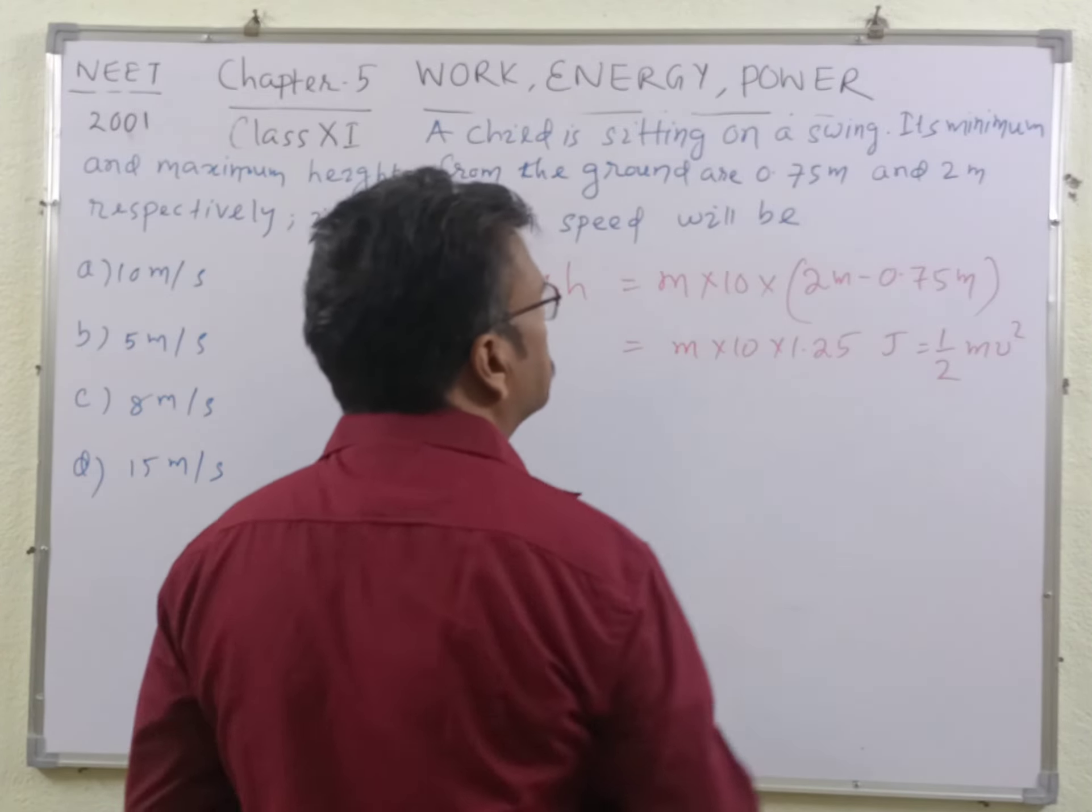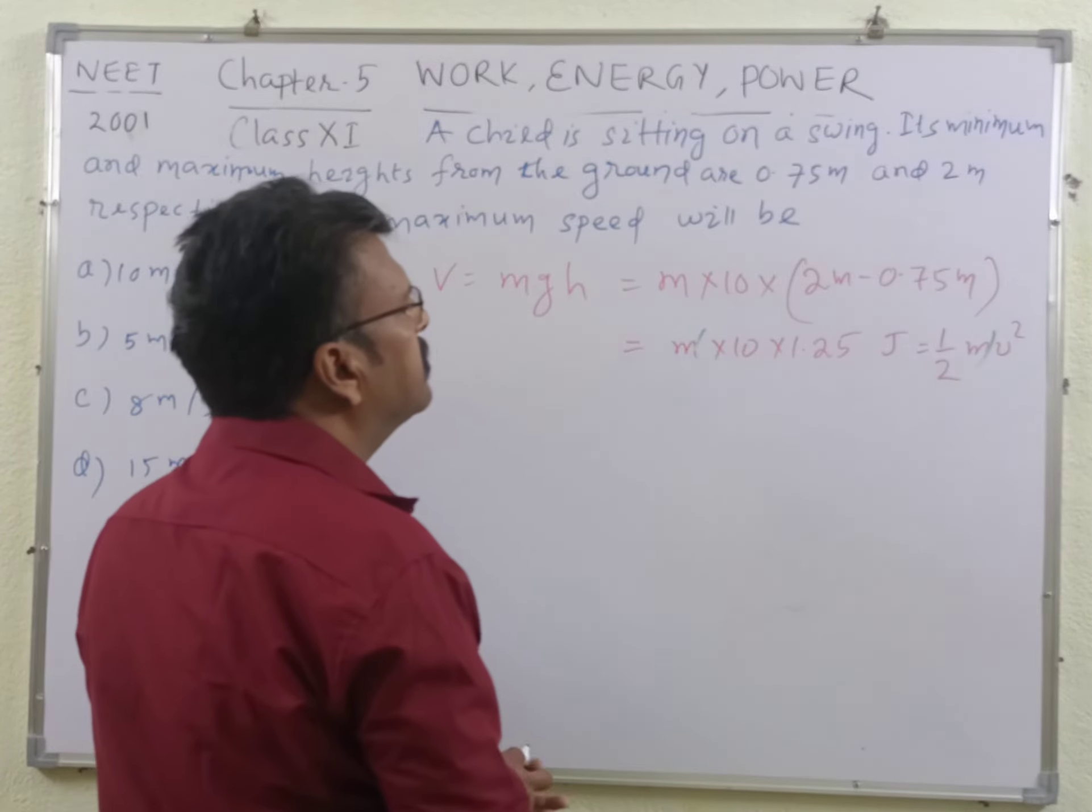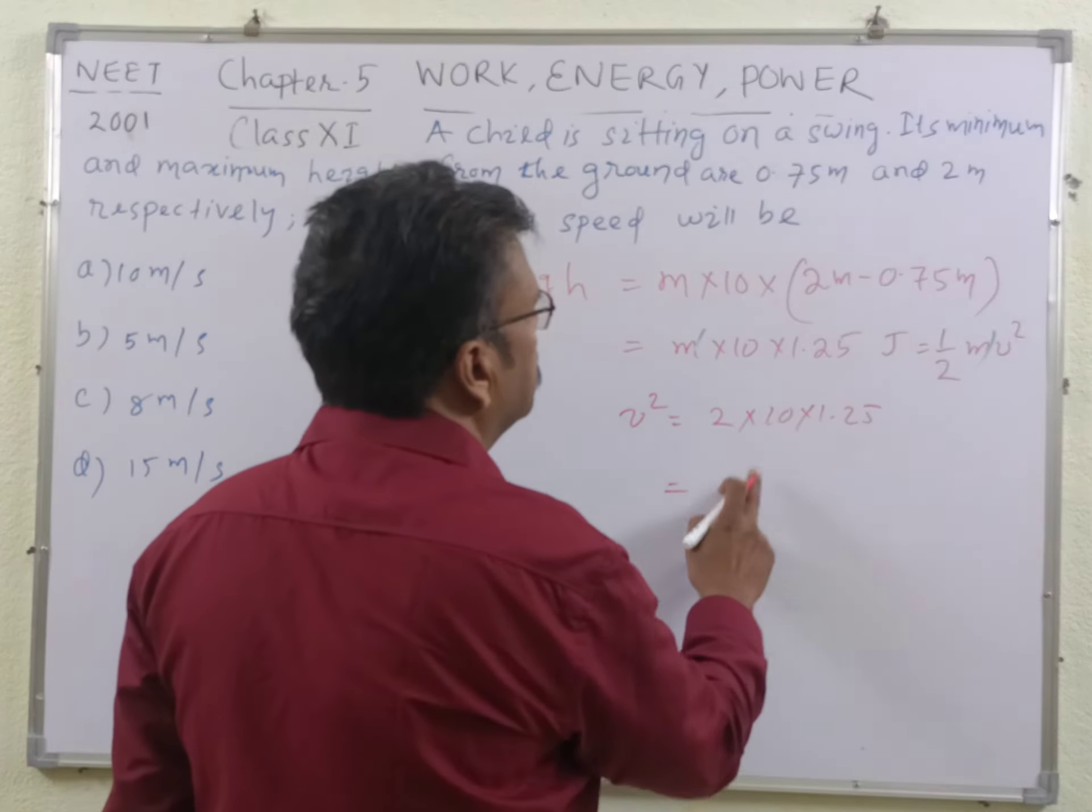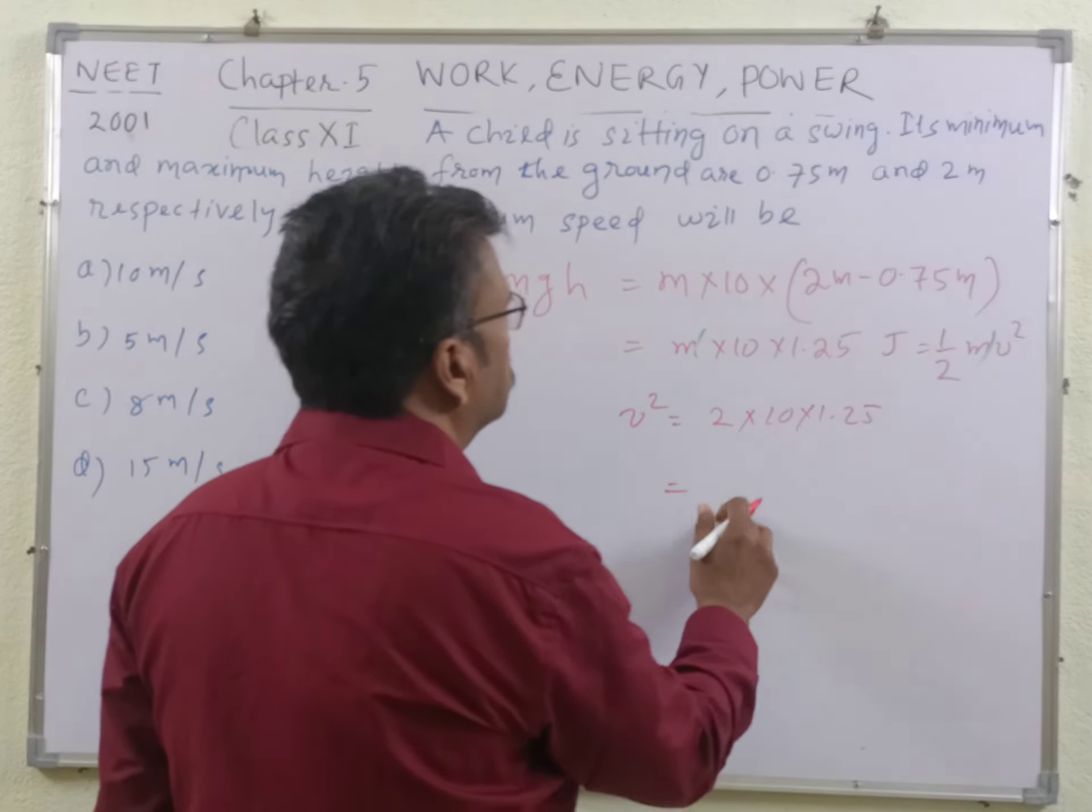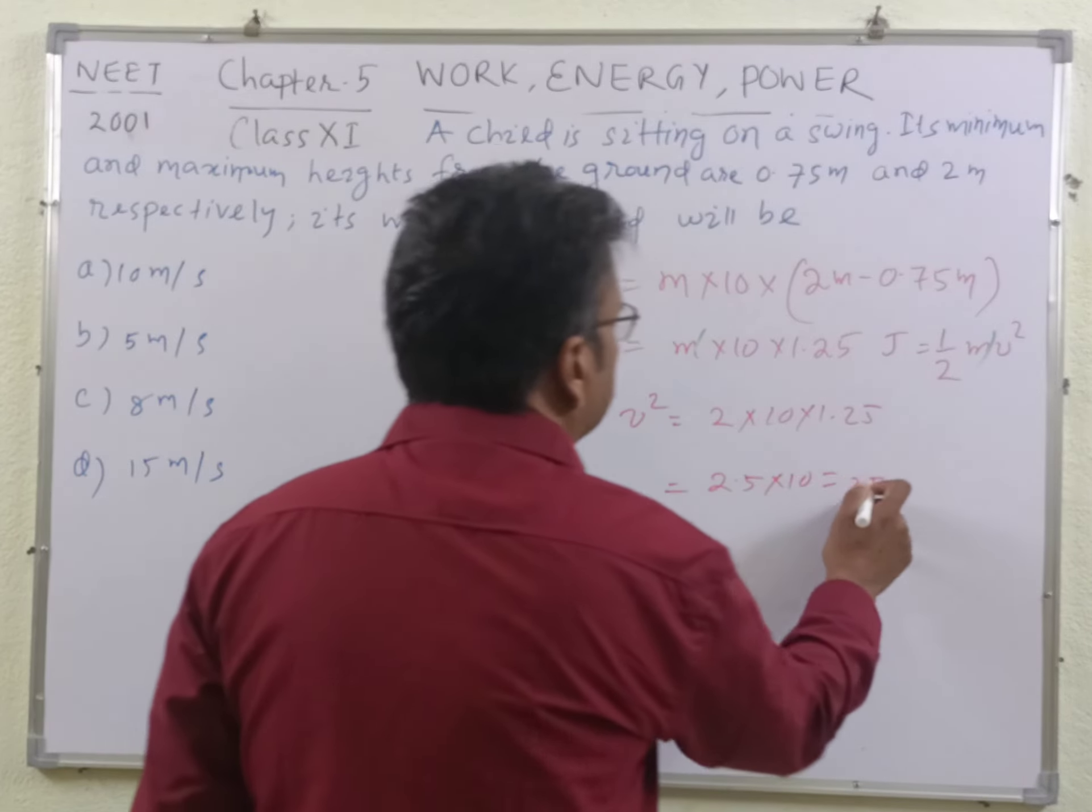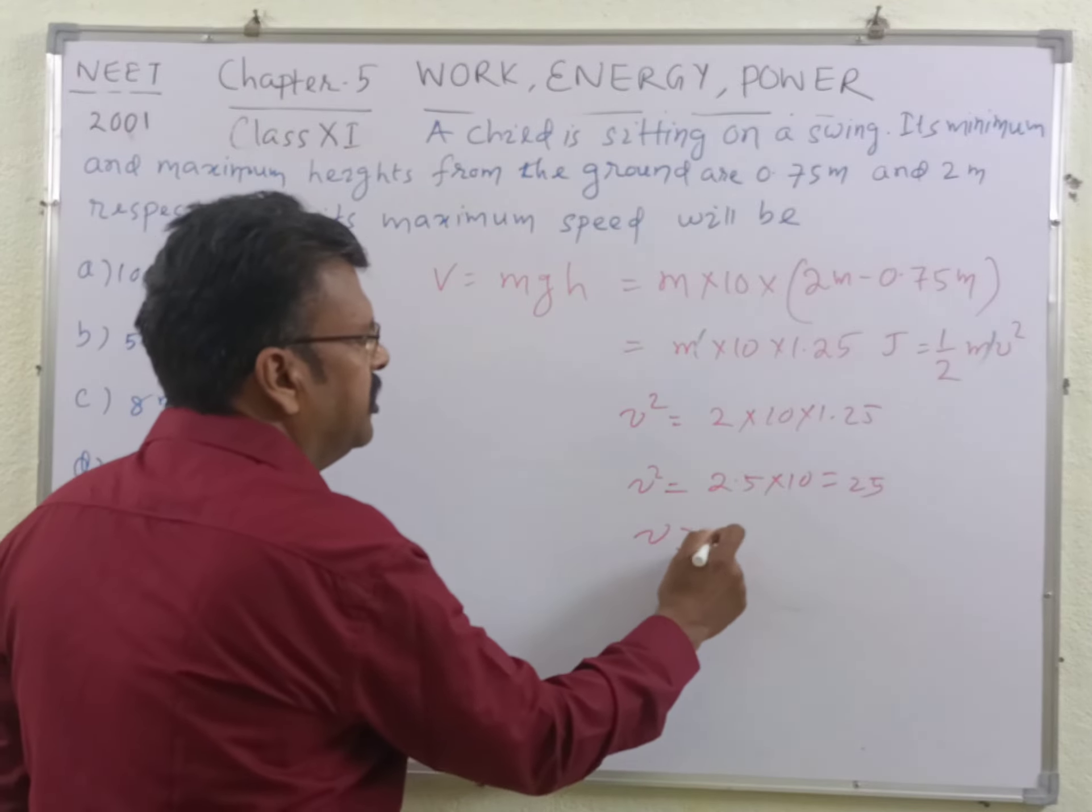So student, we just cancel this m and this m and what we get? We get v square is equal to 2 into 10 into 1.25. And this is 20 into 1.25 means 2 into 1.25 into 10 means 25. This is 25. v square is equal to 25, so v is equal to root over 25 that is 5 meter per second, students.